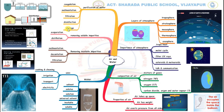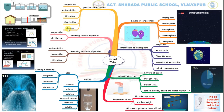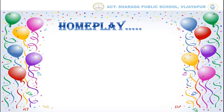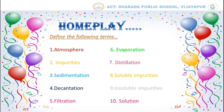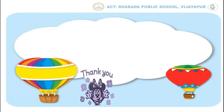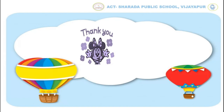I hope that the description on the mind map has helped you understand the topic very well, children. Here is the home assignment for you. I request everyone to define the following terms: atmosphere, impurities, sedimentation, decantation, filtration, evaporation, distillation, soluble impurities, insoluble impurities and solution. Watch the video till the end and write these terms on a sheet. Thank you so much, children. We will meet with another topic in the next video. Have a great day.